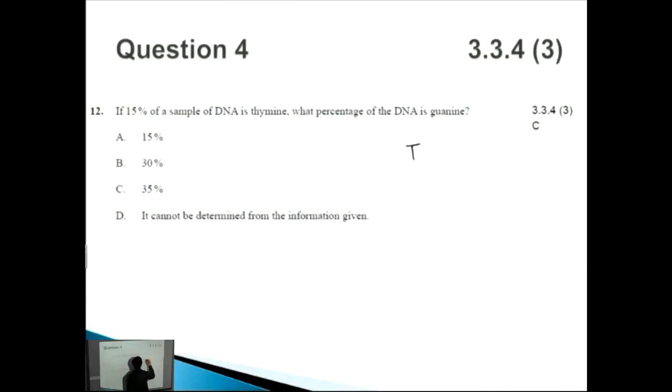So that means if 15% is T, therefore 15% has also got to be A. That leaves a remaining 70% to be divided amongst the other two, to be divided amongst C and G.